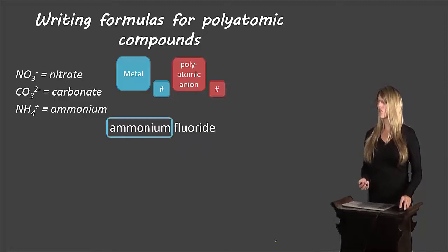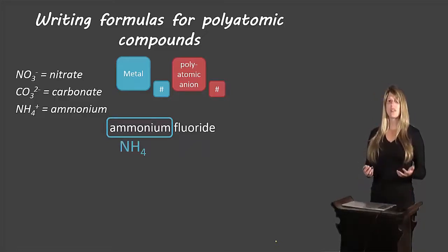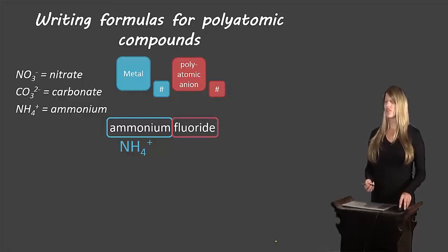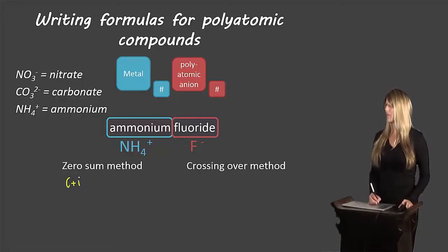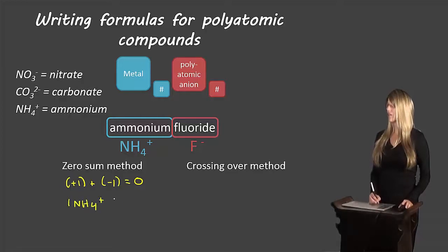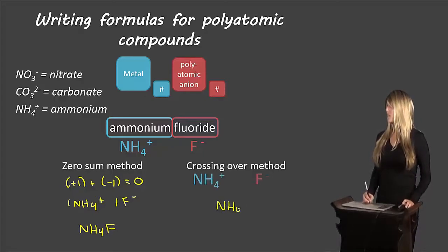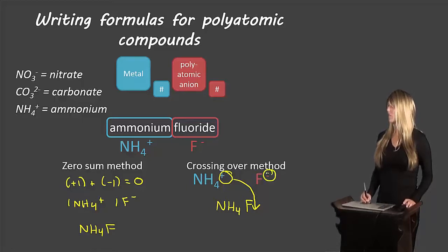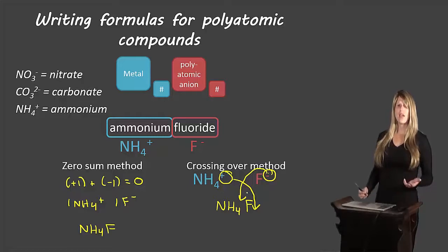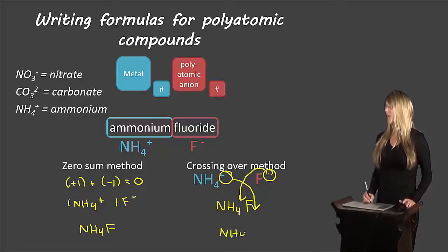One final example: ammonium fluoride. Ammonium is a polyatomic cation with formula NH4 and a 1+ charge. Fluorine has symbol F with a 1− charge from the periodic table. Using the zero sum rule: (+1) + (−1) = 0, so we need one ammonium and one fluorine, giving NH4F. Using the crossing over method: we write NH4 and F beside each other, cross over the charges — both are 1, so no subscripts are written — giving NH4F.